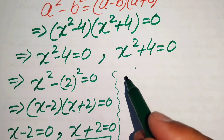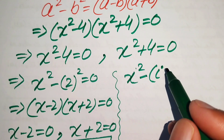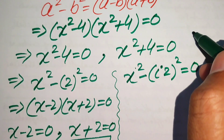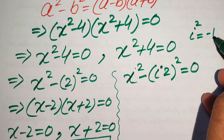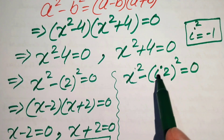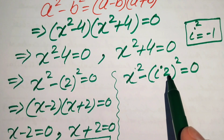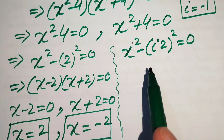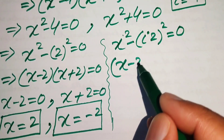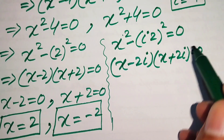Now we solve Case 2: x squared plus 4 equals 0. We rewrite this using the concept of iota, knowing that iota squared equals minus 1. We write plus 4 as minus times minus 4, substitute minus as iota squared, and combine to write x squared minus (2i)² equals 0. Applying the difference of squares formula gives x minus 2 iota into x plus 2 iota equals 0.